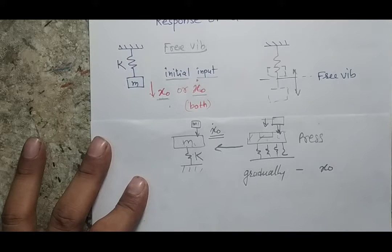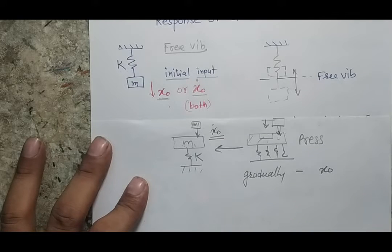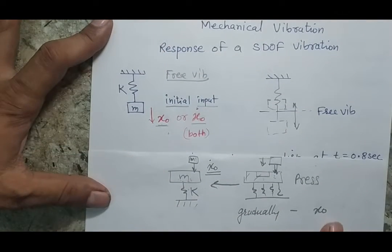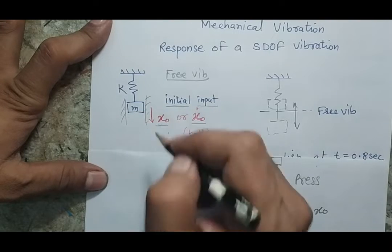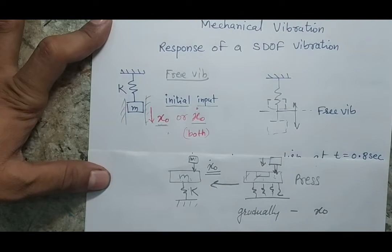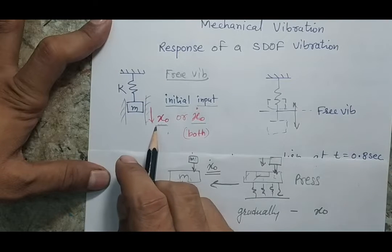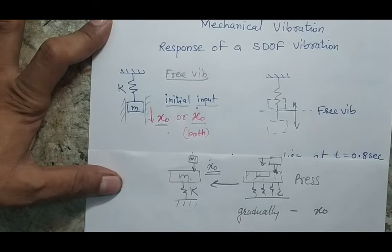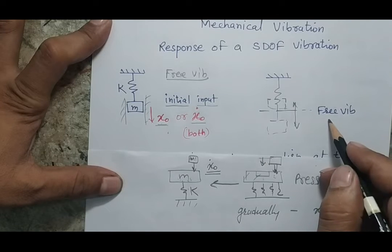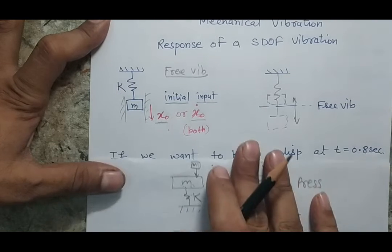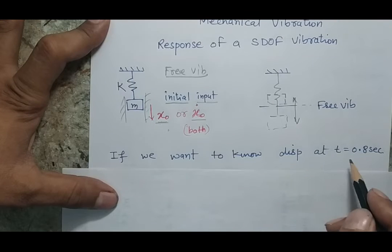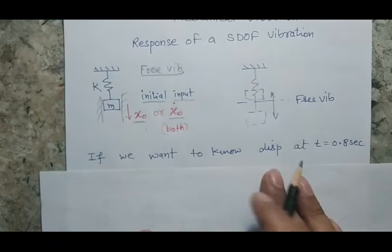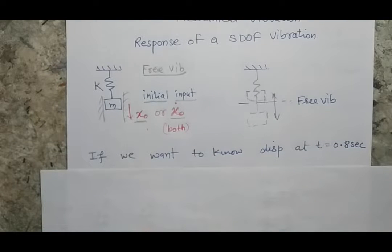We will be more generalized and derive an expression for both initial displacement and initial velocity. I am assuming this is a single degree of freedom system where the mass can only move in the vertical direction. When I give a certain initial disturbance and then remove the force, the mass will vibrate in free mode, and I want to find the displacement of this mass after, say, 0.8 seconds.